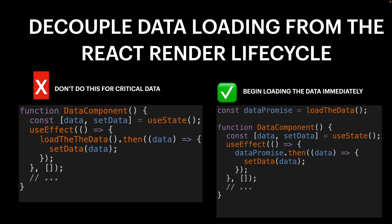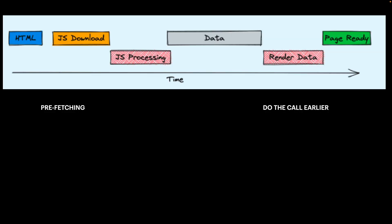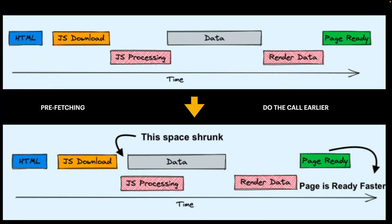Instead of waiting for your component to render and then using useEffect to start loading data after the render, you need to start loading the data separately from rendering. Start loading as soon as you can. If you use React Router 6 loaders they do this. Apollo has prefetching, React Query has similar patterns. If you're rolling your own stuff — like I usually do — I end up making this mistake a lot. If you see it in your network waterfall think: how do I decouple? That alone might save you 50 milliseconds.